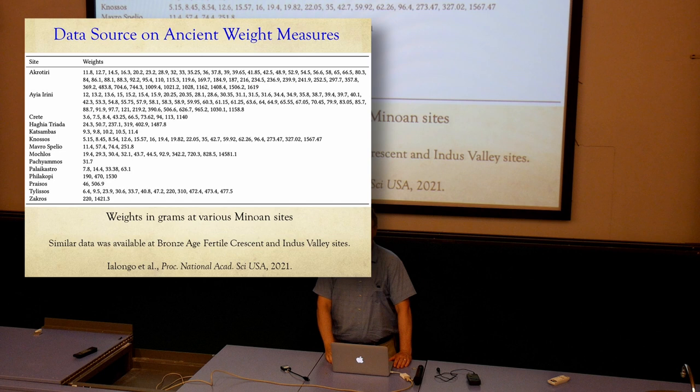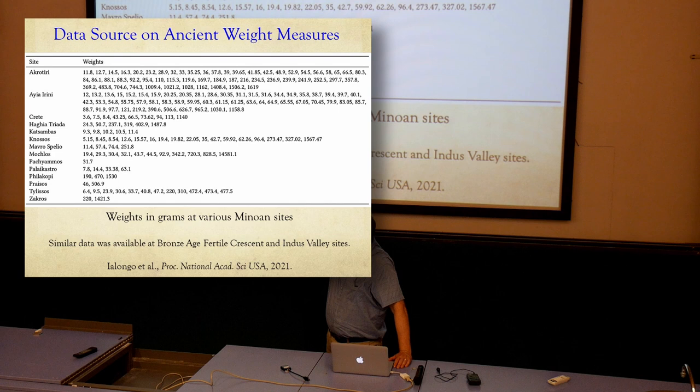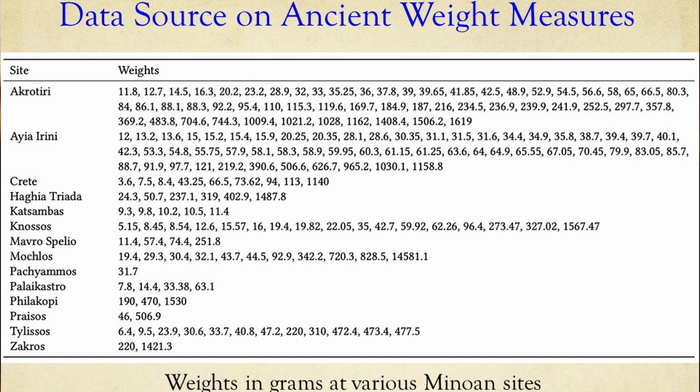I have taken the same set of data. As you can see, there are many places associated with the Minoan culture — Akrotiri, Knossos, Festus, and so on. We have started mapping this data: Minoan sites are indicated by blue, Mesopotamia sites by green, and Indus Valley civilization sites by pink.